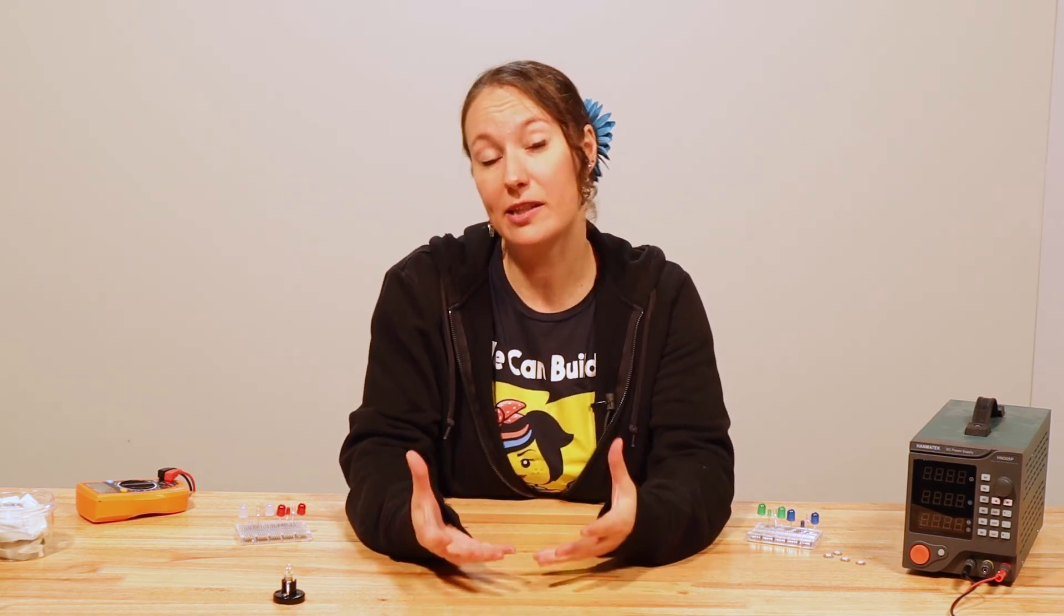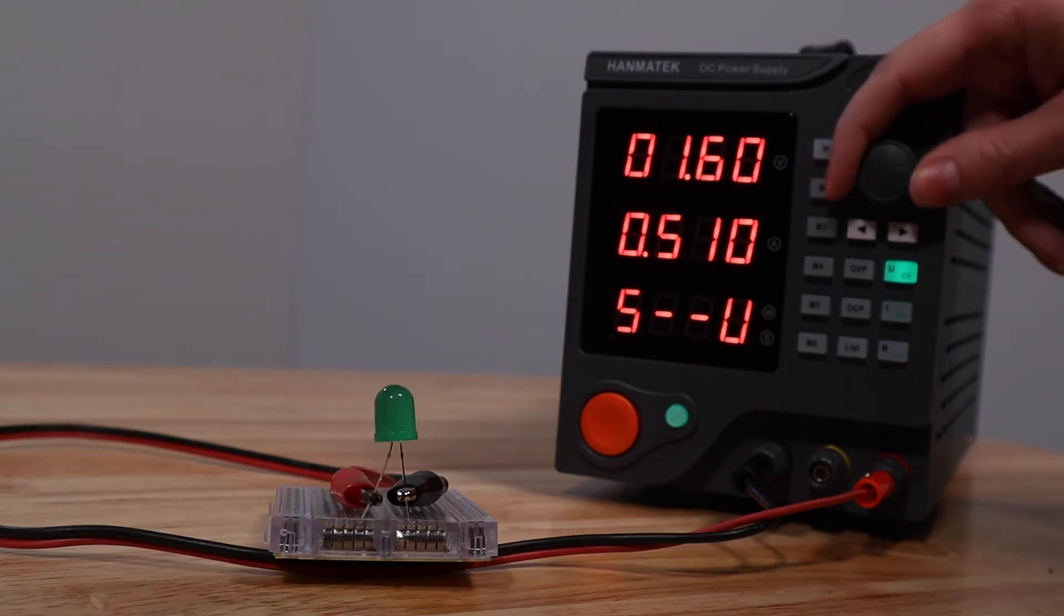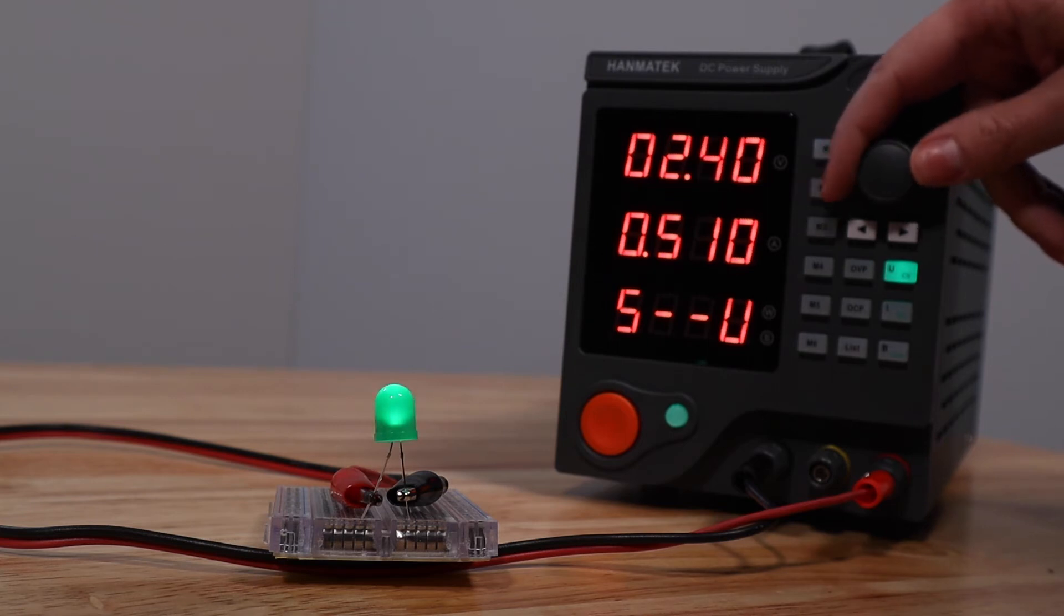LEDs vary in the voltage they require, which is often around 2 or 3 volts, but which varies depending on the color they emit. If I connect this 10mm red LED, the LED begins to light around 1.7 volts and gets to full brightness around 2.3 volts. This green LED begins lighting at 2.1 volts and reaches full brightness around 2.5 volts.